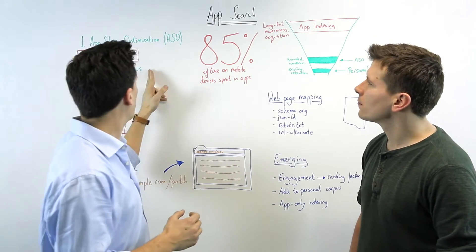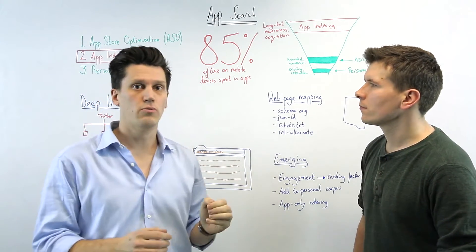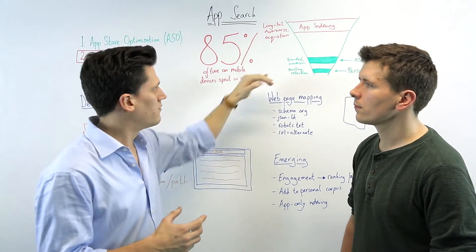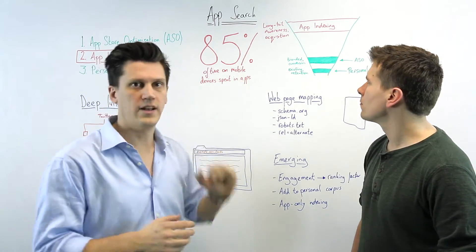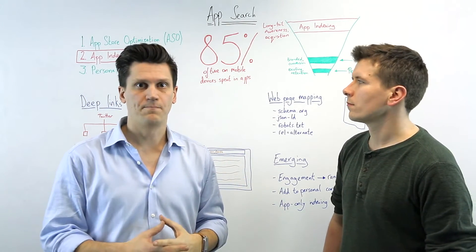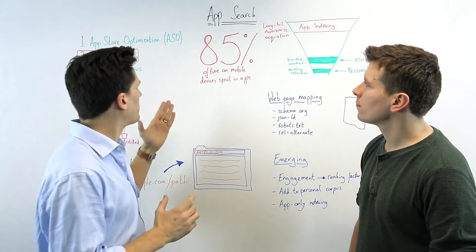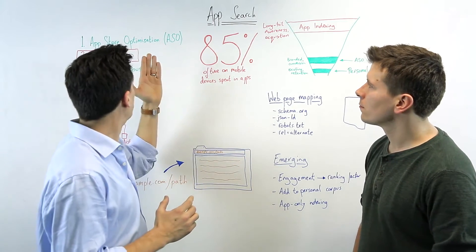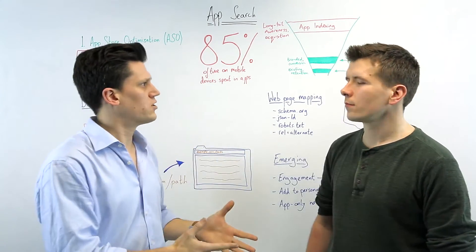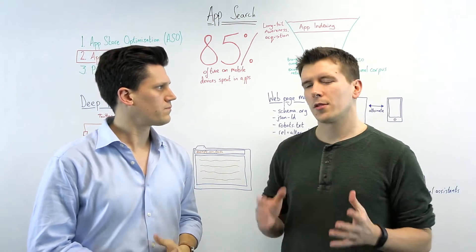The third element we'll touch on later is the personal corpus — the idea that, right down at the bottom of the funnel, it's about retaining users once you have them. But the critical thing is app indexing; that's what we want to spend most of our time on. What are the prerequisites for app indexing, Tom?